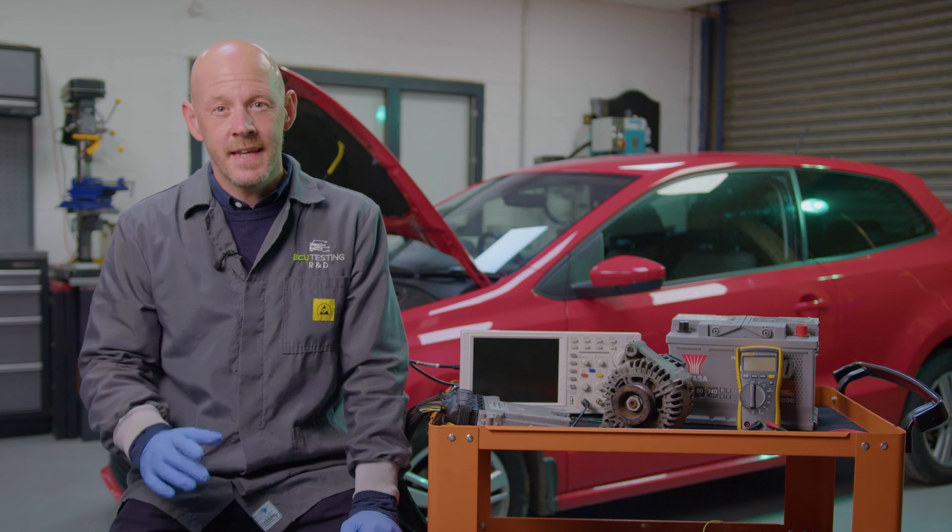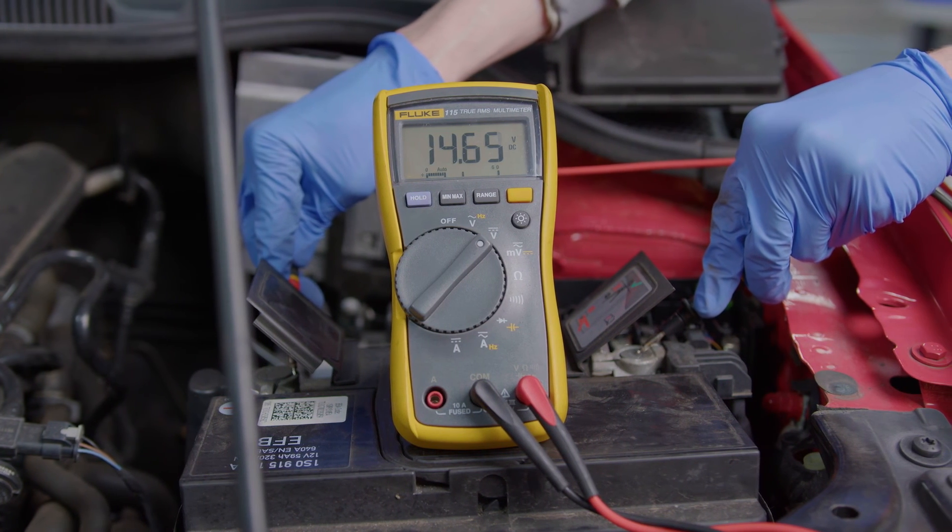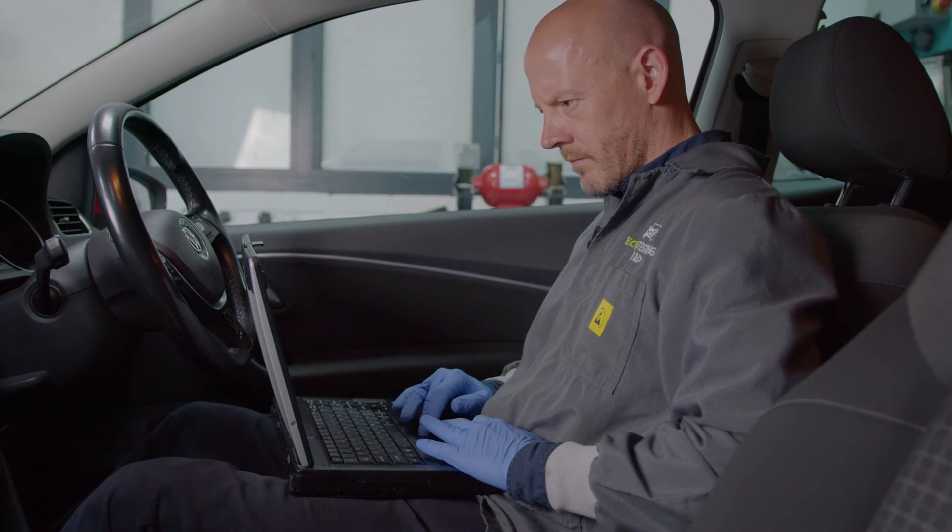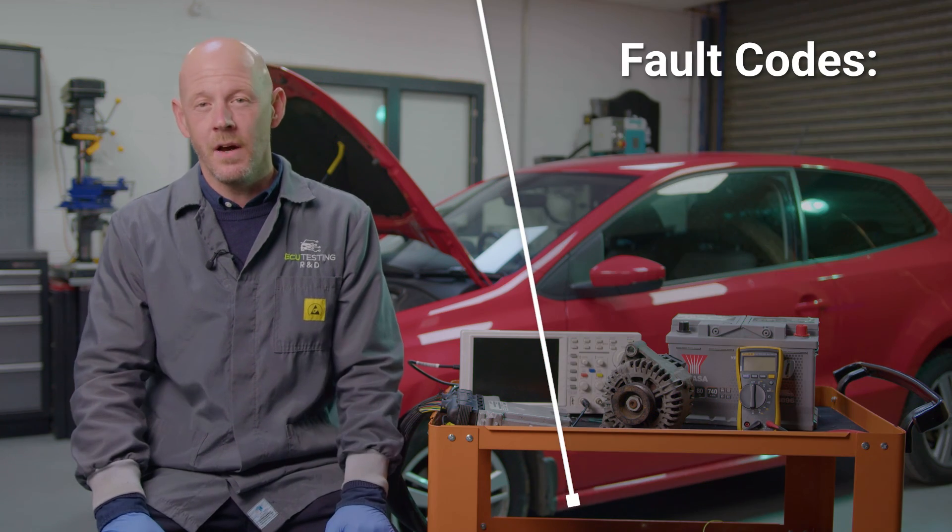The battery light indicates that the ECU has detected an overcharging or undercharging of the vehicle's battery which can lead to a huge number of issues from electrical problems to the vehicle not starting at all and a big old list of fault codes.